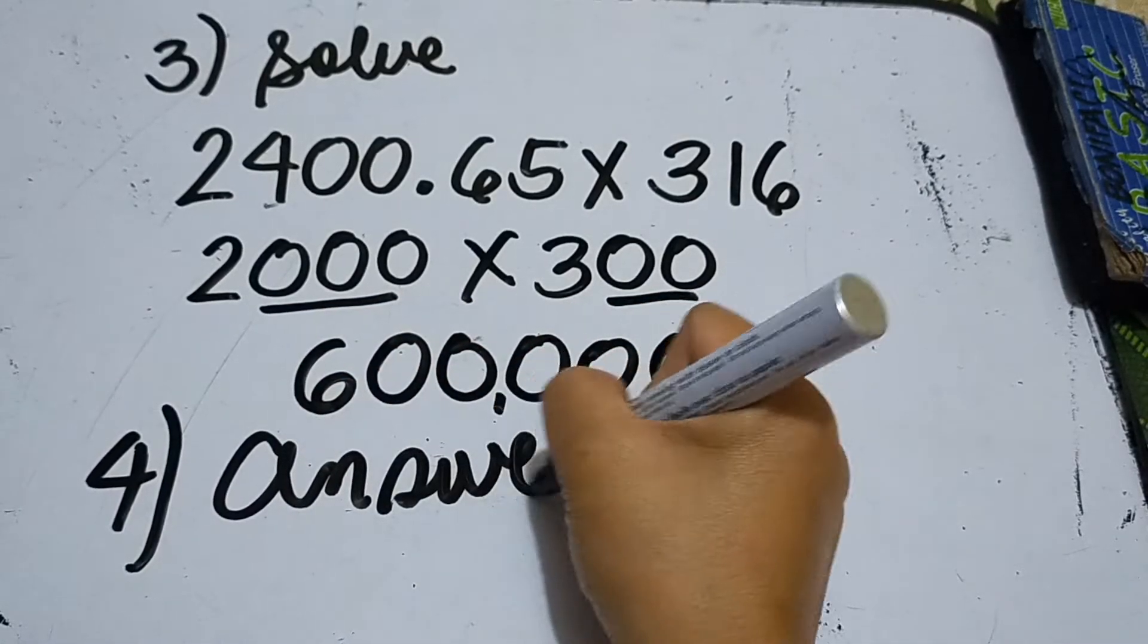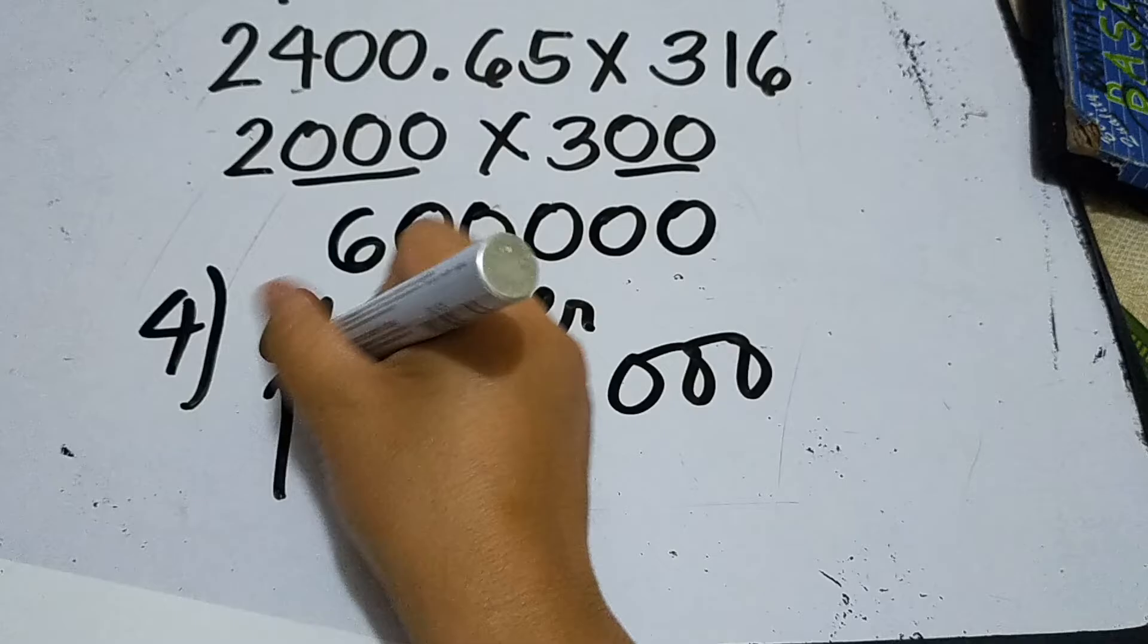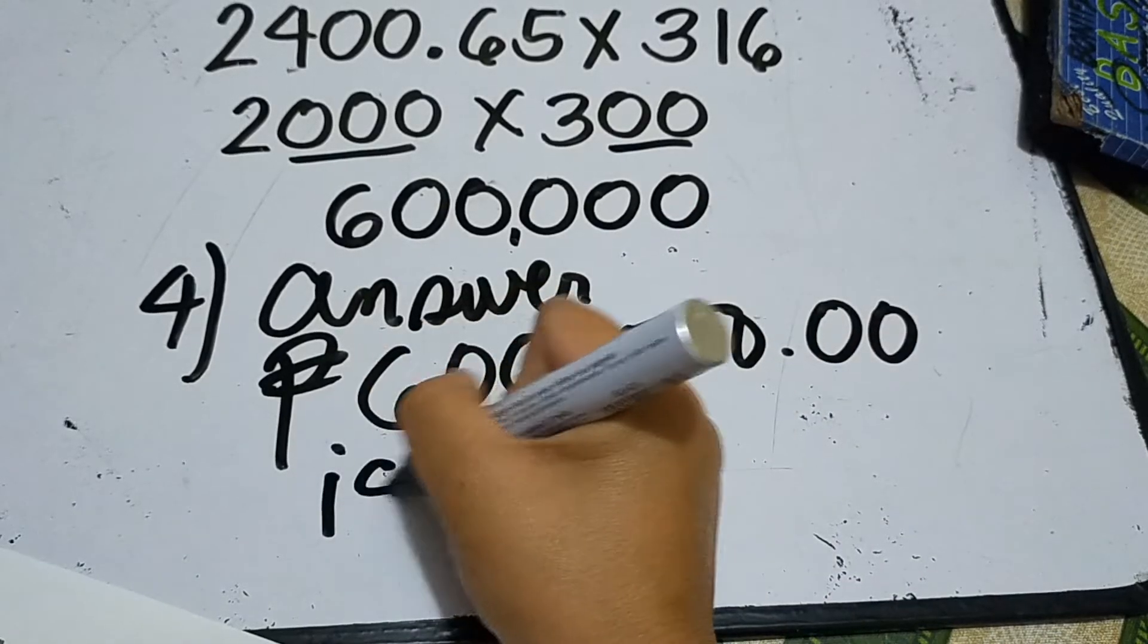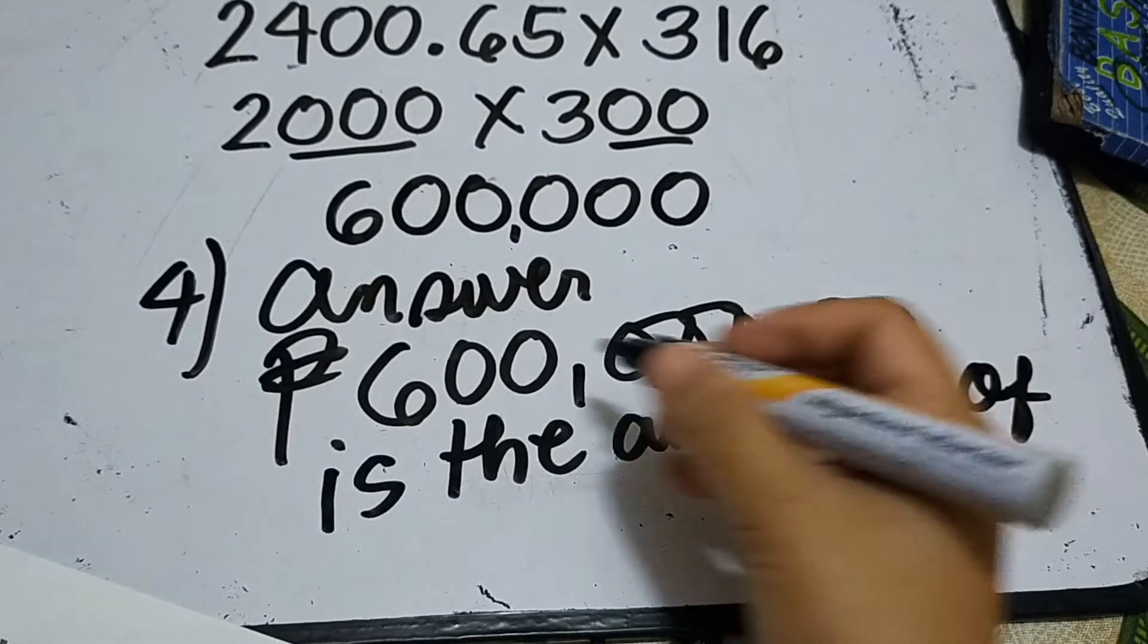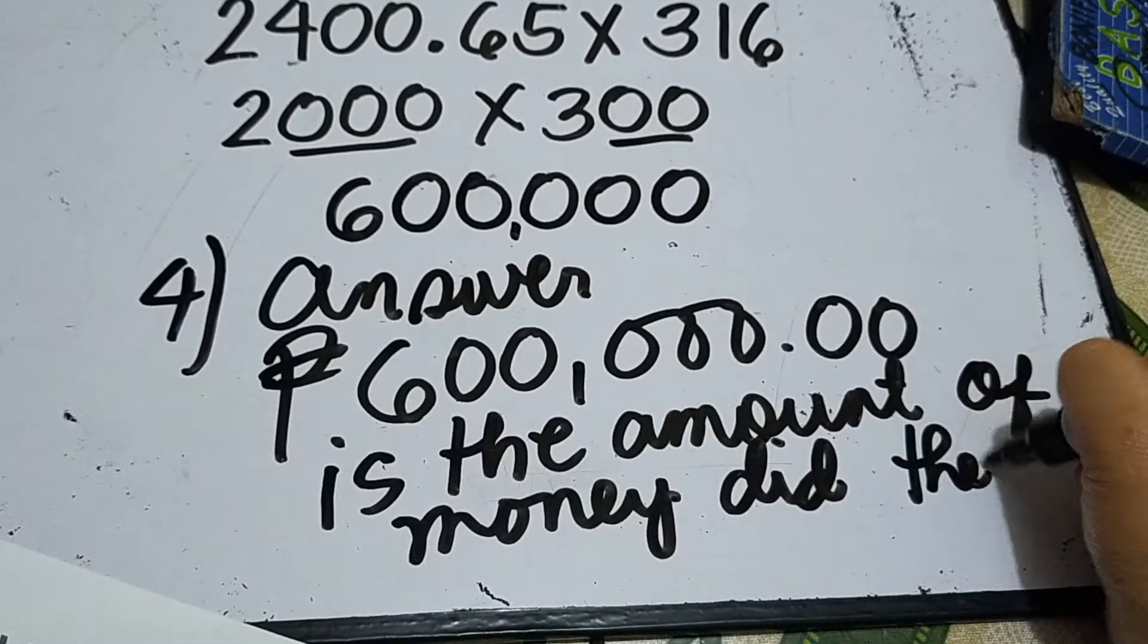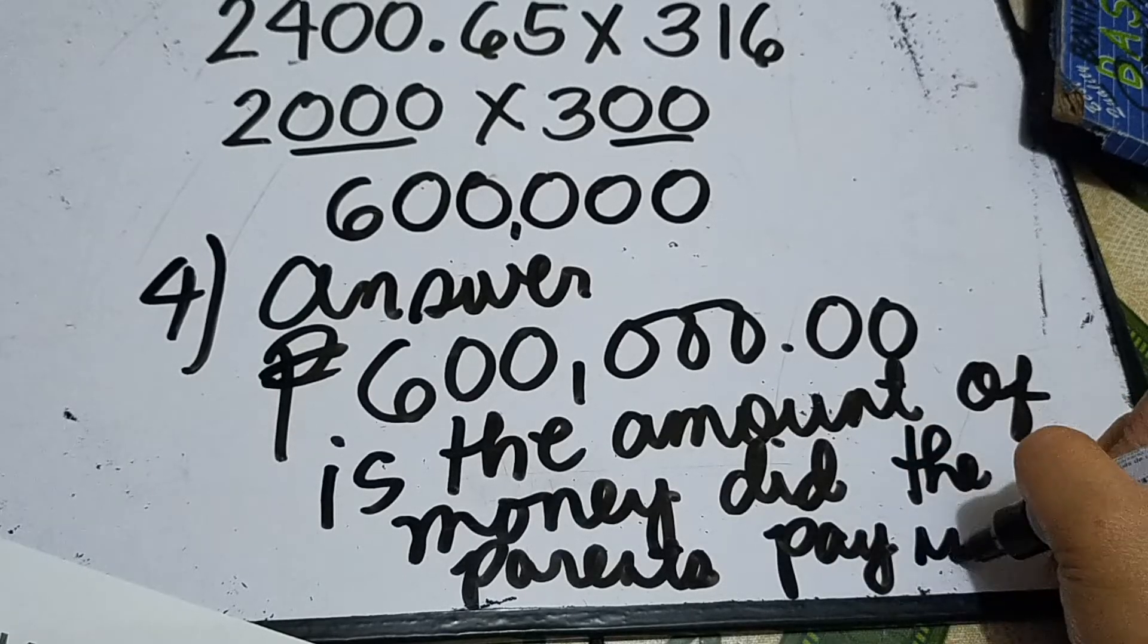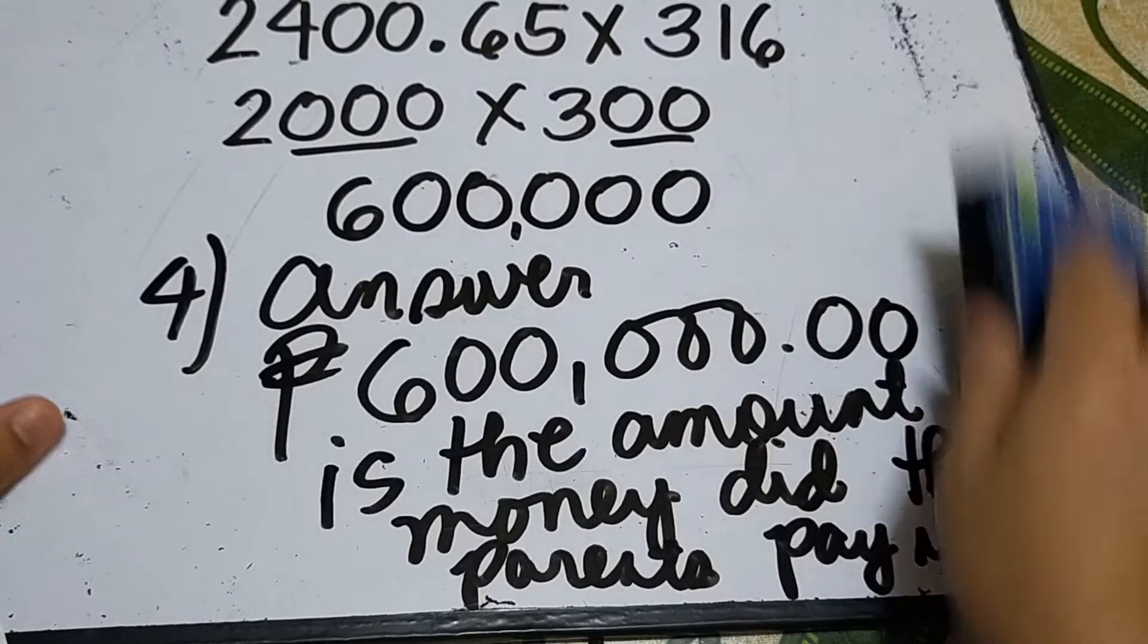The answer is 600,000 pesos. When you write it in the answer part, include the label: 600,000 pesos is the amount of money did the parents pay in all. Another problem. That means the procedure we use is the four-step plan, which you will always use in solving word problems, step by step.